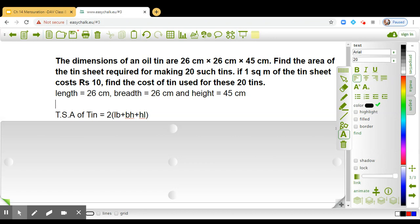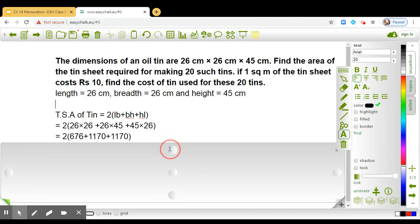So now can you compute the TSA by taking L as 26 cm, breadth as 26 cm and height as 45 cm? Just put into this formula. Very nice. When you put these values and simplify, we get the total surface area of the tin to be equal to 6032. I hope you have got the same answer, and this is in square cm.